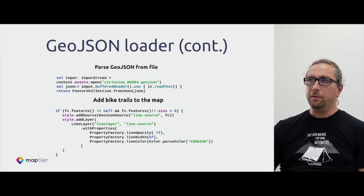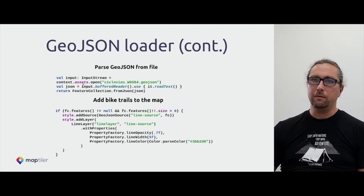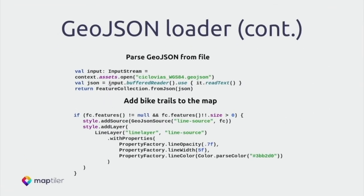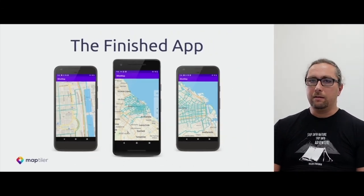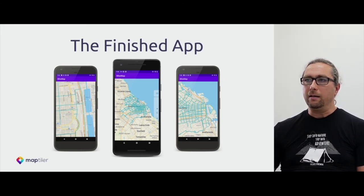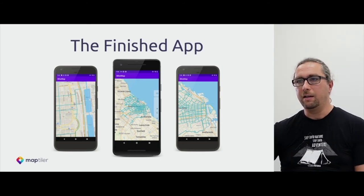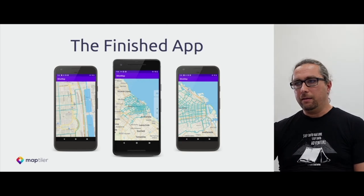The rest is straightforward. We open a stream from assets on the device, use Kotlin and the library to read and parse the data, and once we have the FeatureCollection we add the source to the style and add a layer linking back to the source, telling the SDK how to render the geometries. The application simply shows a basic map with polylines rendered on top of it.